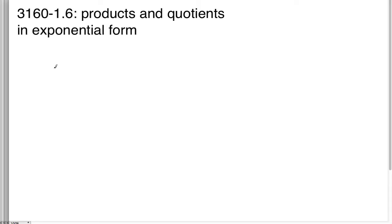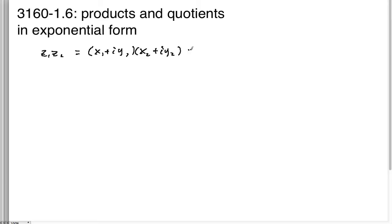Recall that before we learned about multiplication, like z1 times z2, where that's going to be (x1 plus iy1) times (x2 plus iy2). What we had to do is that whole FOIL process that we learned from algebra, where these multiply and these multiply.